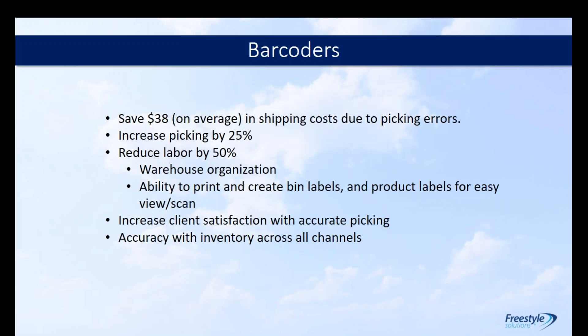The Bar Coders solution can save you $30 on average in shipping costs due to picking errors, increase your picking by 25%, and reduce labor by 50% through better warehouse organization. It also gives you the ability to print and create labels, print product labels for easy viewing and scanning, improve customer satisfaction with accurate picking, ensure items aren't damaged, and improve inventory accuracy across all your sellable channels.